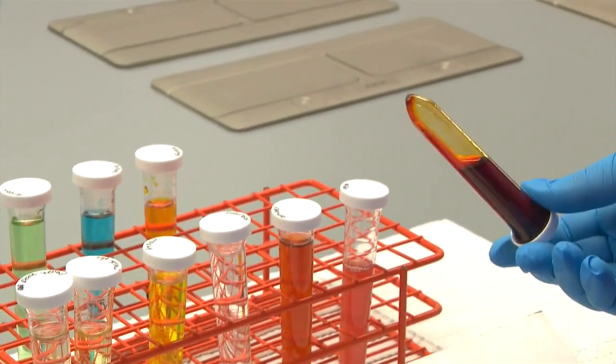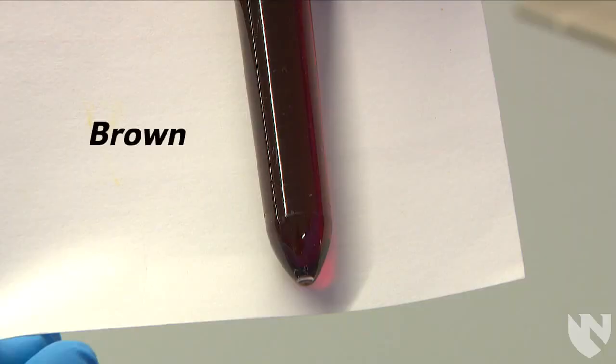This is an example of a brown urine. We report a urine as brown when we see a brown or a dark red brown appearance.